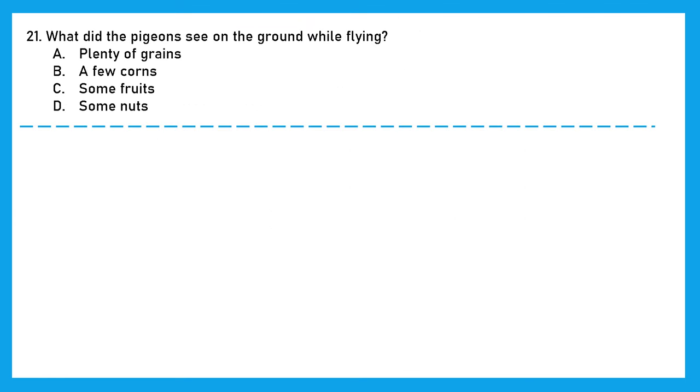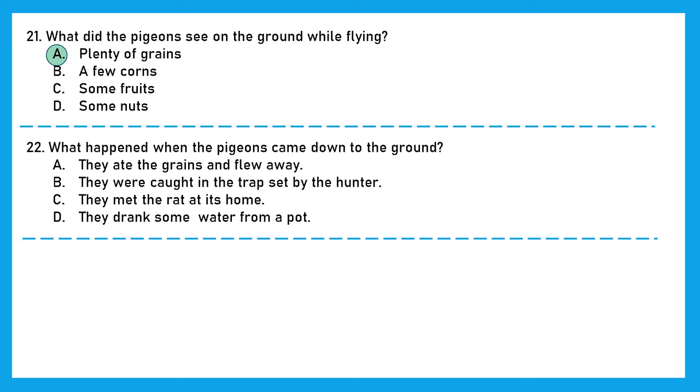Now let's solve some questions. Question 21. What did the pigeons see on the ground while flying? Plenty of grains, a few corn, some fruits, or some nuts. The right answer is option A, plenty of grains. Question 22. What happened when the pigeons came down to the ground? They ate the greens and flew away, they were caught in the trap set by the hunter, they met the rat at its home, or they drank some water from a pot. The right answer is option B, they were caught in the trap set by the hunter.